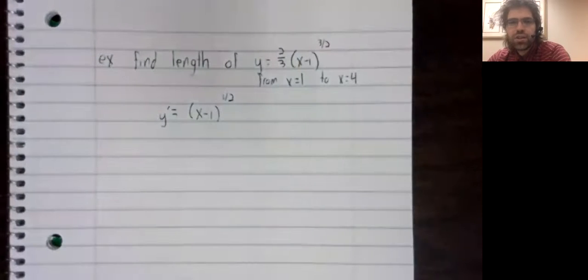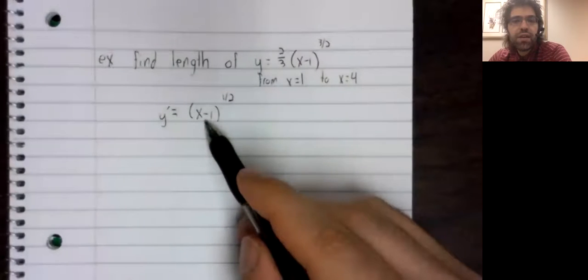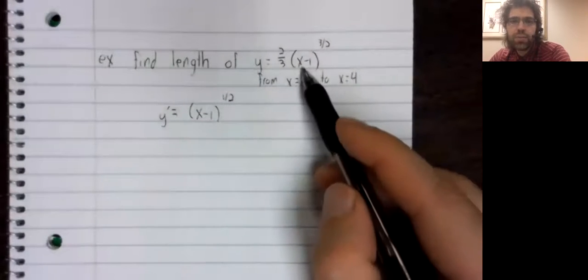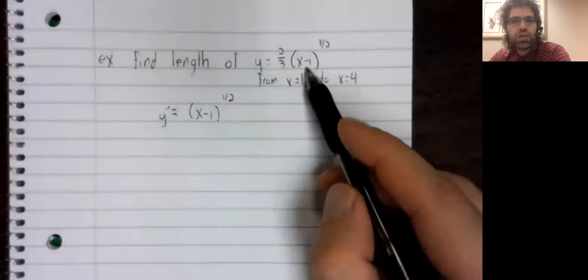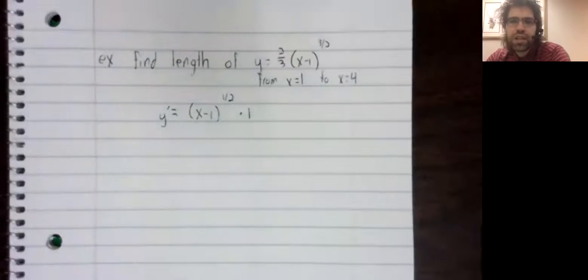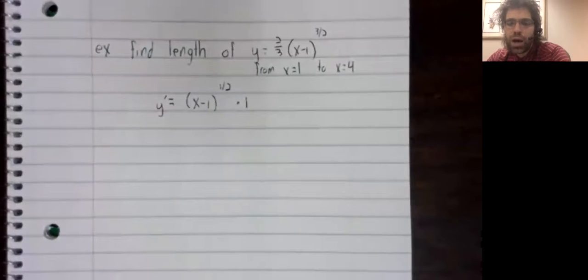And we get the square root. The derivative of x minus 1 is 1. So we are using the chain rule here, but the derivative of the inside function is just 1.